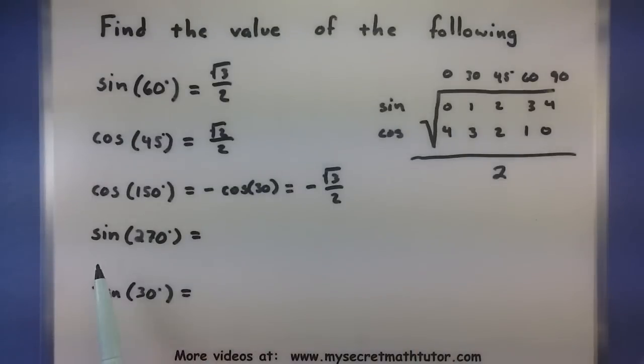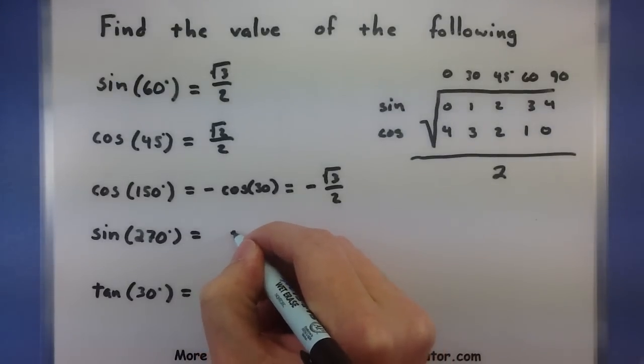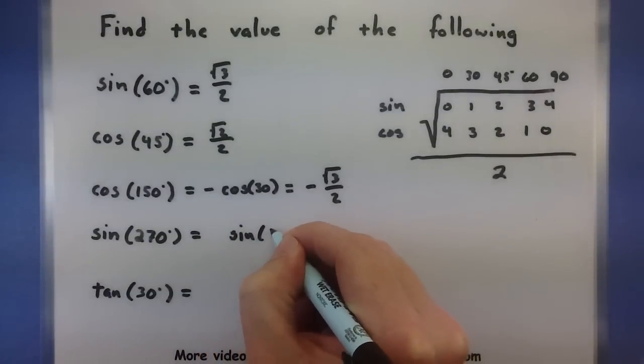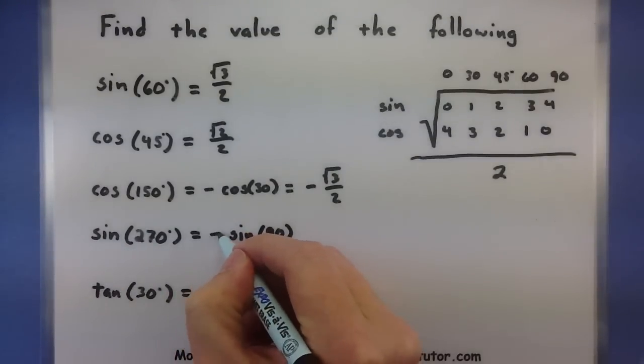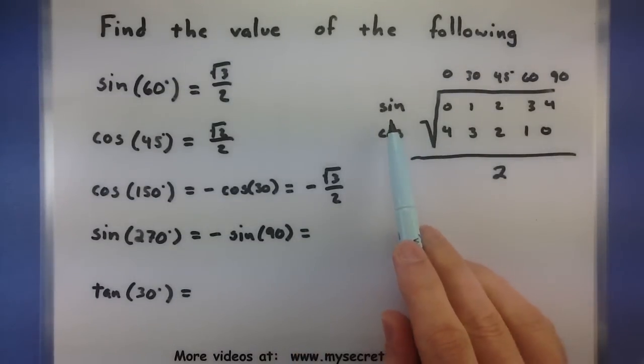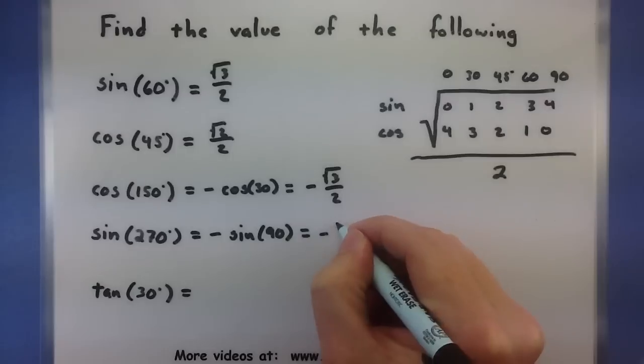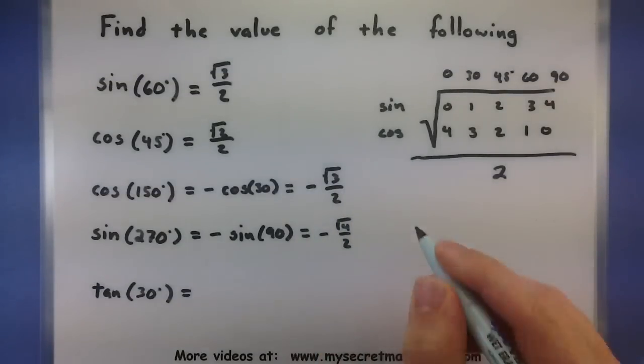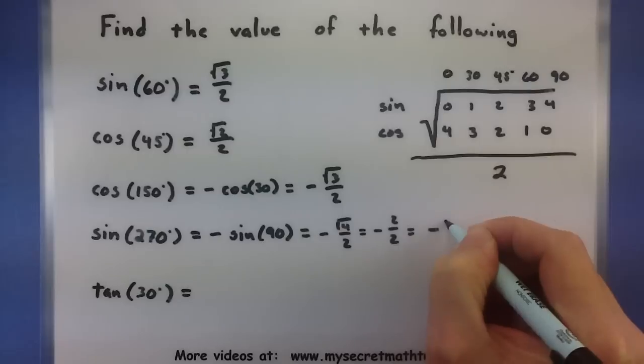All right, on to another one. Sine of 270 degrees. Hmm, okay, I'm definitely not in the first quadrant anymore. But let's take this all the way back to the first quadrant, thinking about its reference angle. So, let's see, this is like sine of 90 degrees. And of course, when we're facing straight down like that, sine is negative. And now we're in good shape. Let's see, sine of 90 is square root of 4 over 2. And look at that, it reduces. So negative 2 over 2, or just negative 1 is my value.